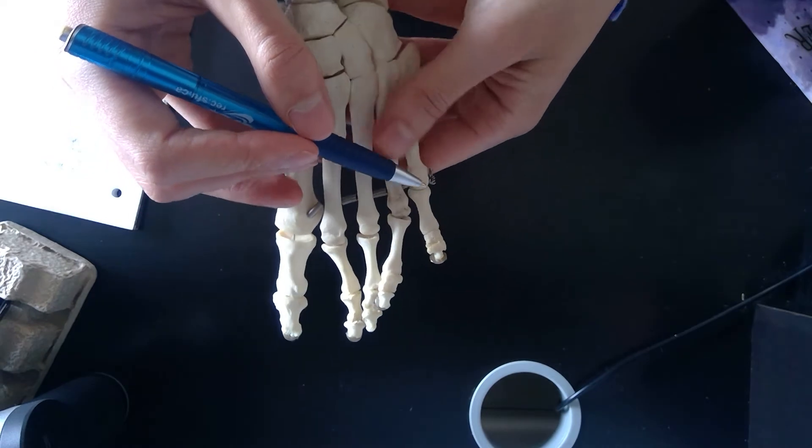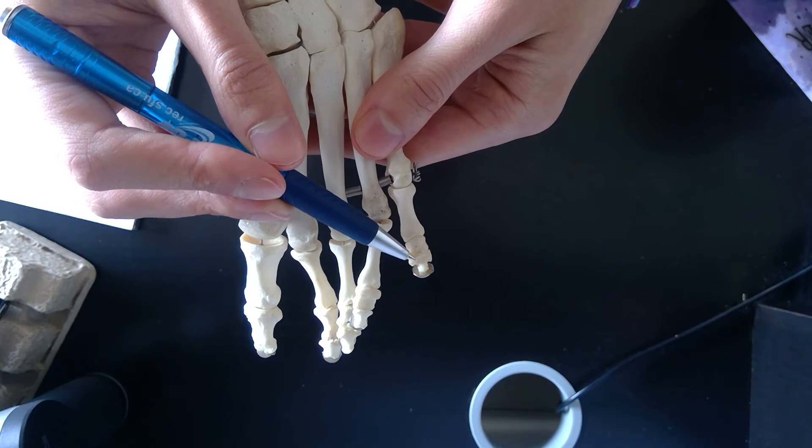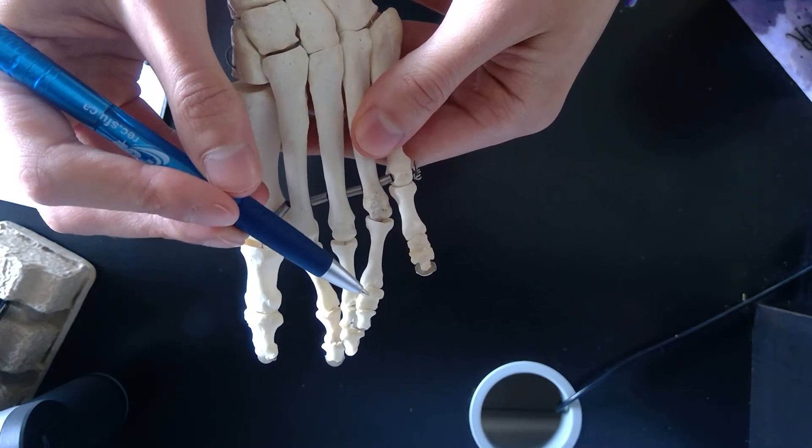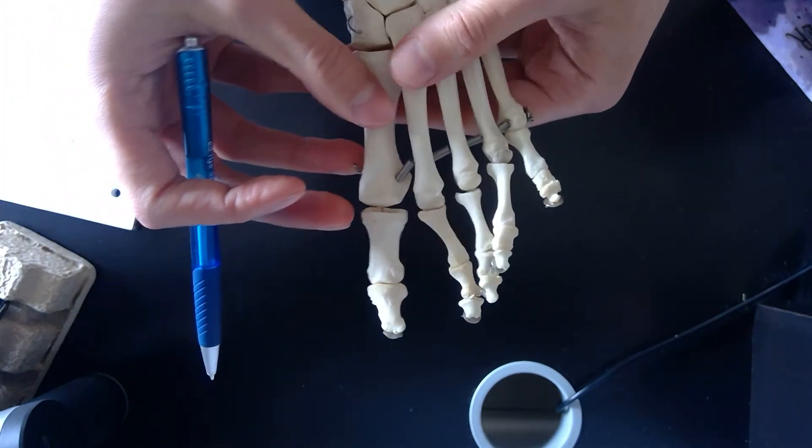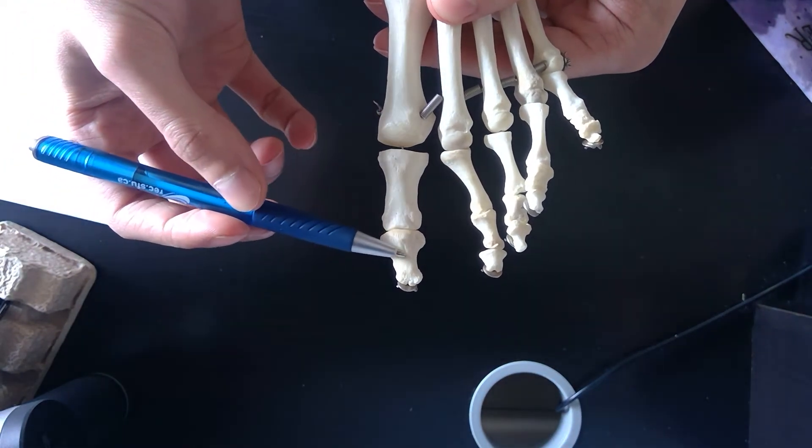And now each one of the digits are going to have a proximal, middle, and distal phalange, each one with exception to the big toe, which you guessed it, just has a proximal and a distal.